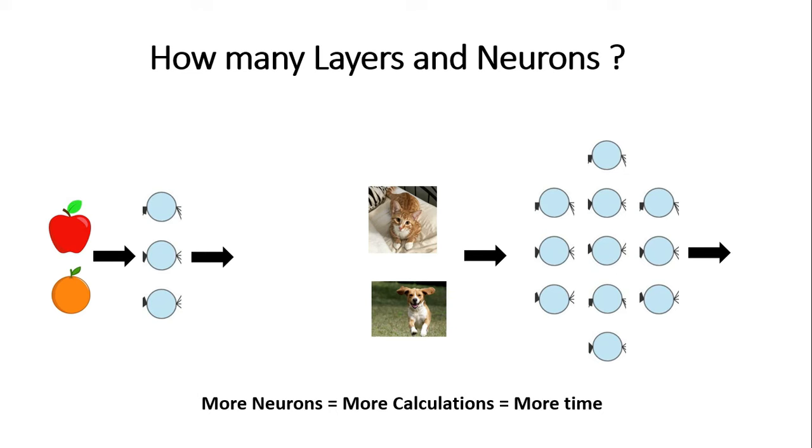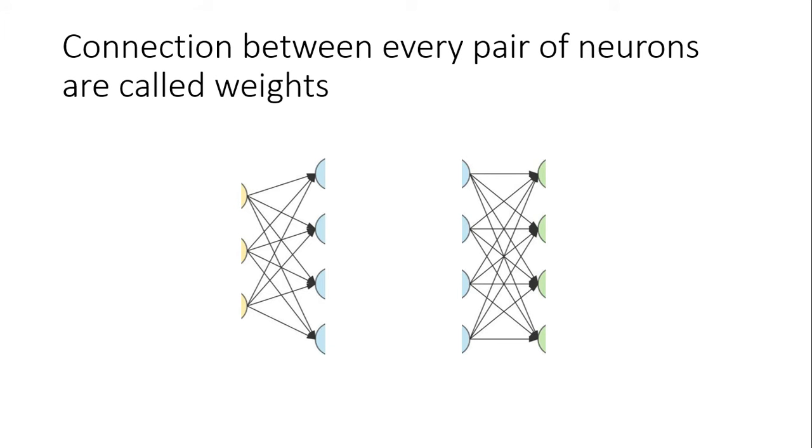So, if we can make our model with few neurons and few layers, then we need not use more number of layers. Now, you understood about neurons and the layers.